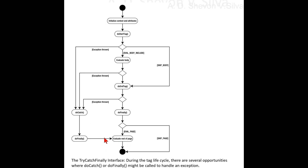Something to notice is that the doatch method won't be called if an exception is thrown before the execution of the doStartTag method — perhaps when the context or attributes are being set. Therefore, it is best not to put any logic into attribute setter methods that may cause an exception to be thrown.